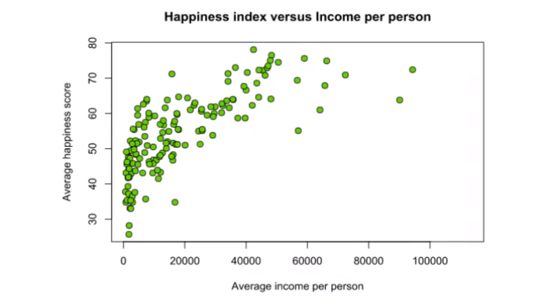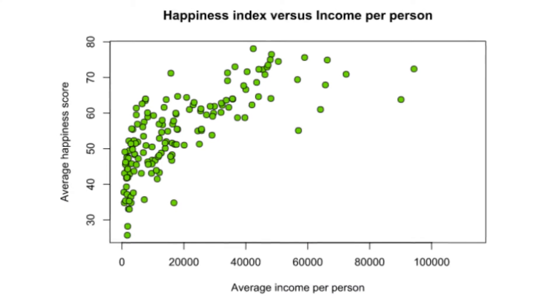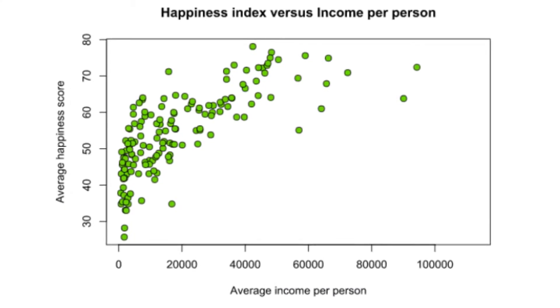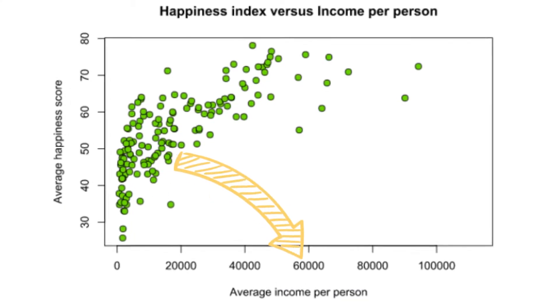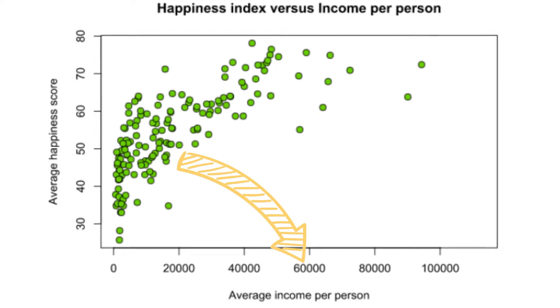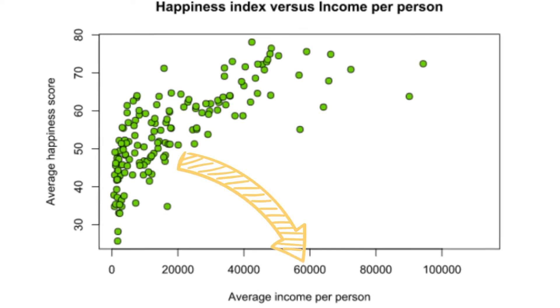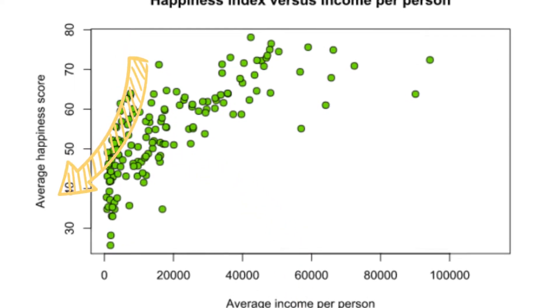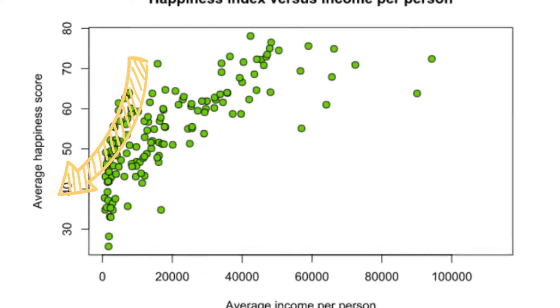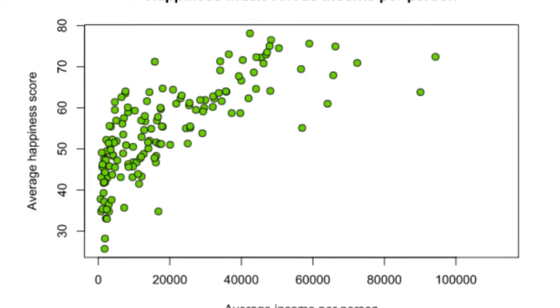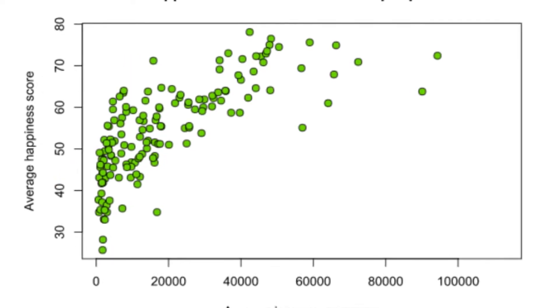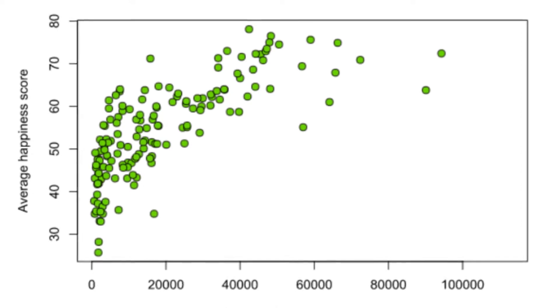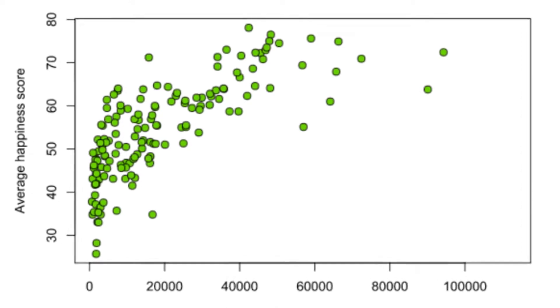Most times when it comes to numerical data we use more of the Pearson's correlation. The scatterplot consists of a horizontal axis and a vertical axis. On the horizontal axis we have one of the variables, which is the X variable, also known as the independent variable. On the vertical axis we have the Y variable, which is the dependent variable.